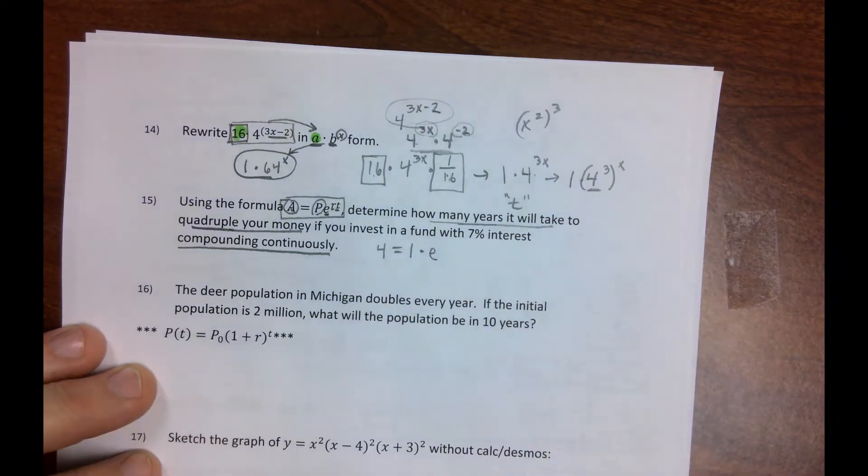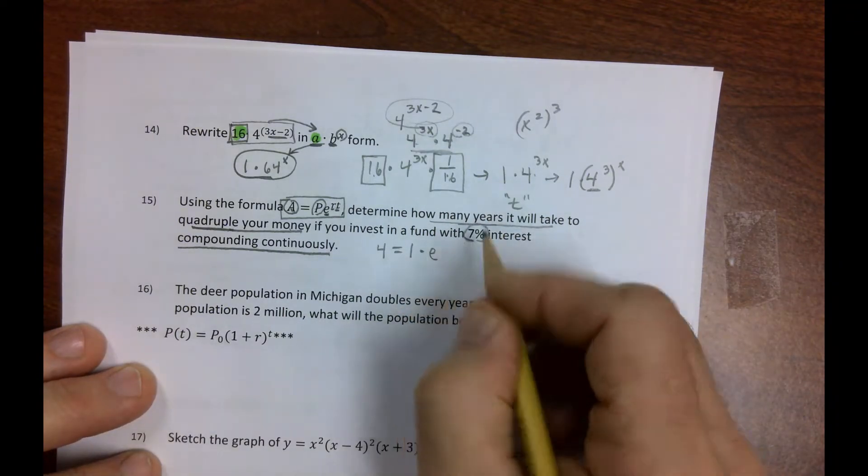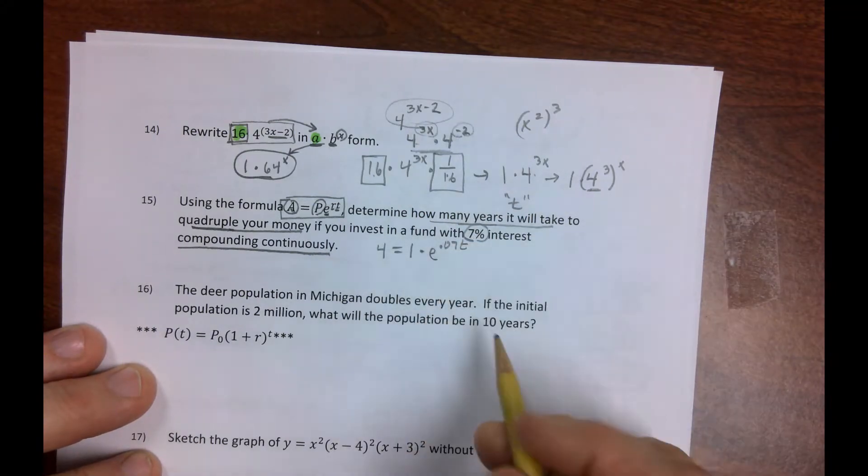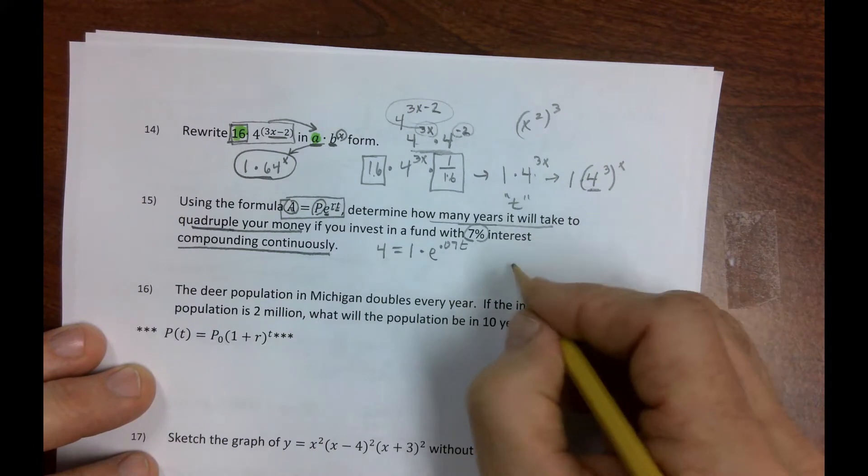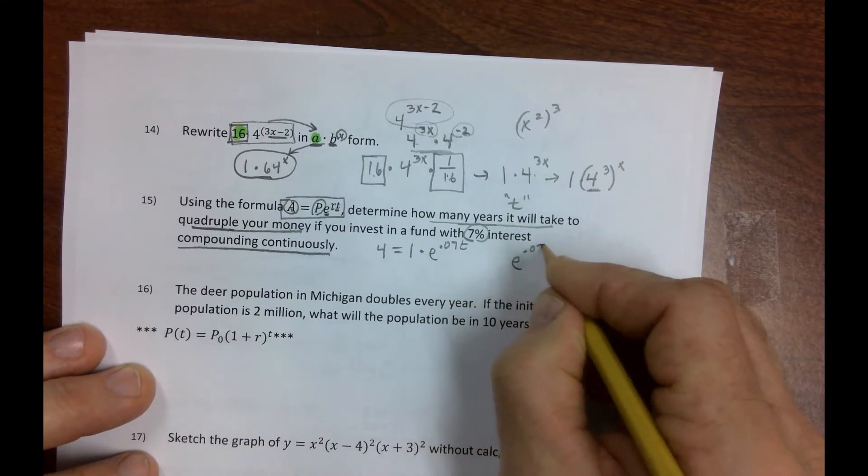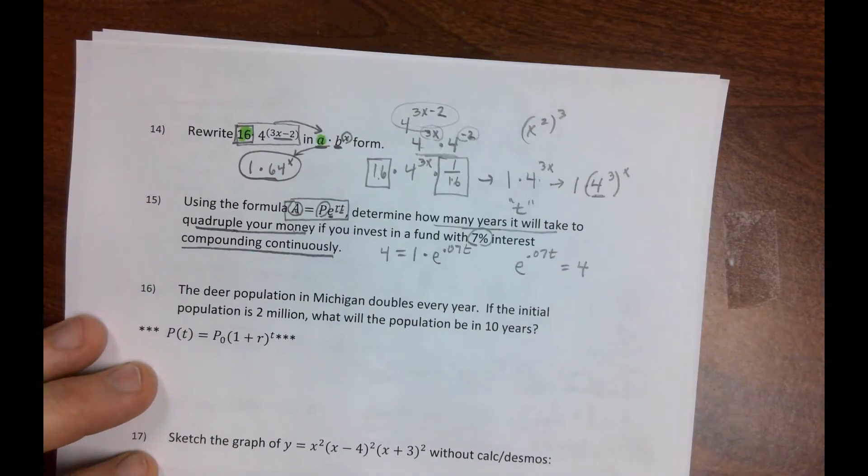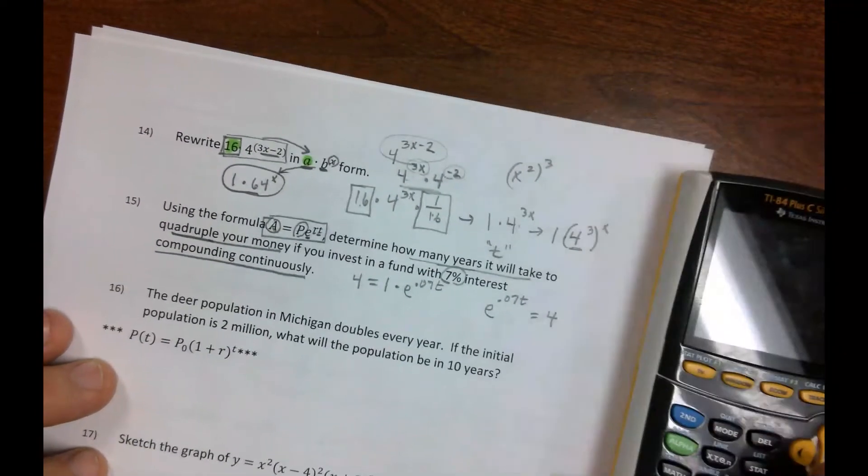Times E. Interest rate is 7%, which is .07T. Now this, I'm going to flip it around because my brain likes it that way. And I've got myself this math problem. That's what it boils down to. So, what do you got to do?